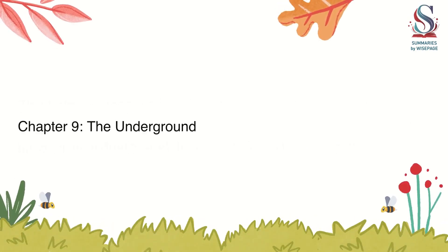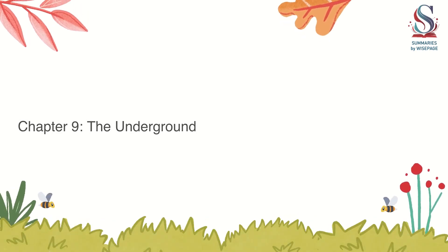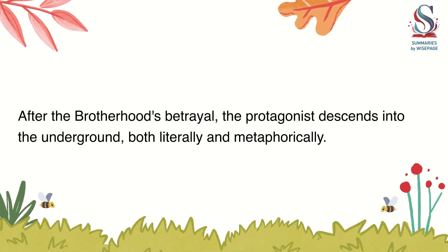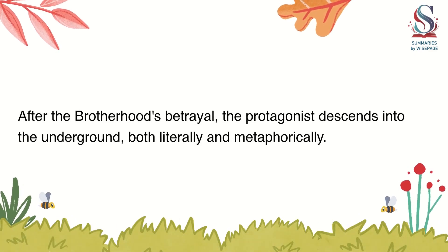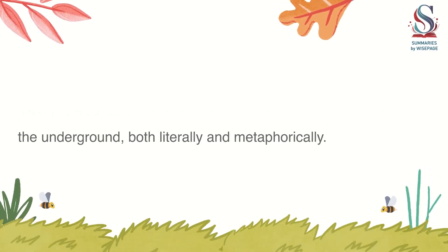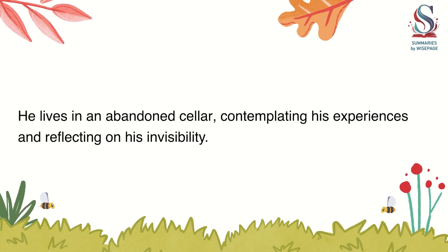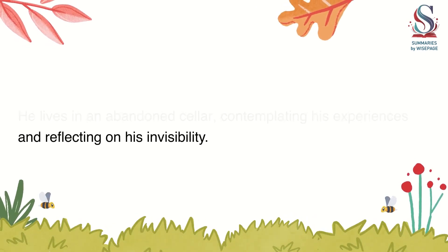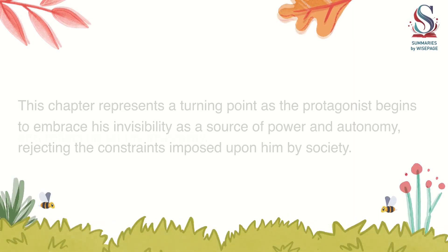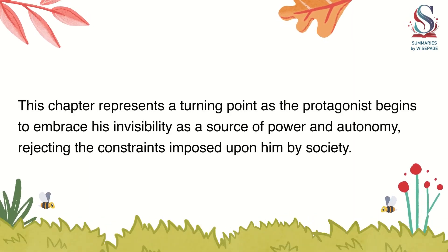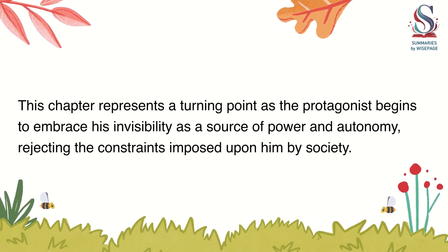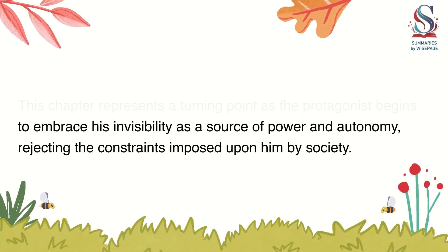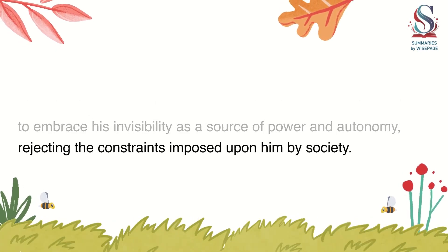Chapter 9: The Underground. After the Brotherhood's betrayal, the protagonist descends into the underground, both literally and metaphorically. He lives in an abandoned cellar, contemplating his experiences and reflecting on his invisibility. This chapter represents a turning point as the protagonist begins to embrace his invisibility as a source of power and autonomy, rejecting the constraints imposed upon him by society.